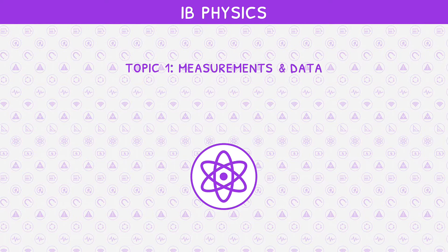Welcome back to our IB Physics video series. This is the second and final video in IB Physics Topic 1, Measurements and Data, where we will be looking at accuracy and precision, uncertainty, errors and graphing.